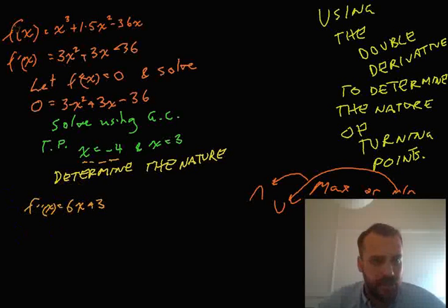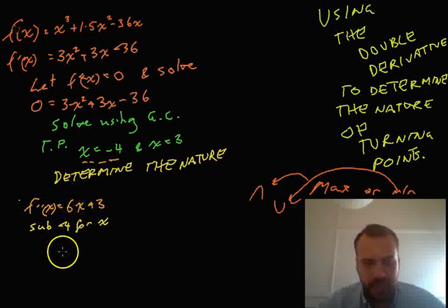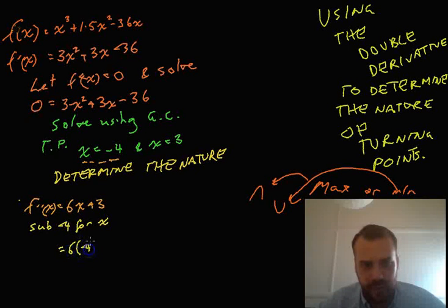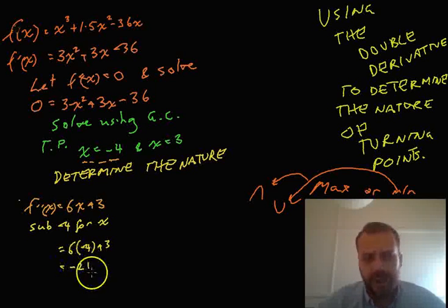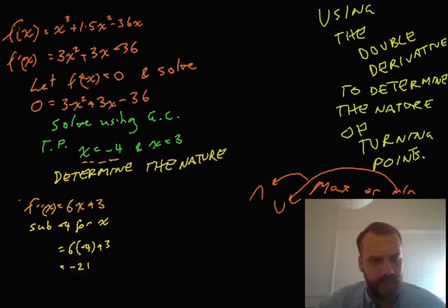And then I'm going to sub negative 4 for x. I'm going to put negative 4 in here. Now, when I do that, 6 times negative 4 plus 3, that's going to be negative 24 plus 3. That's going to be negative 21. Now, we don't actually care what the number is. We don't care whether that's negative 21 or negative 1 million or negative 0.5. What we care about is the sign. It's negative.